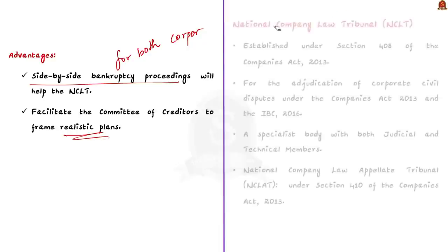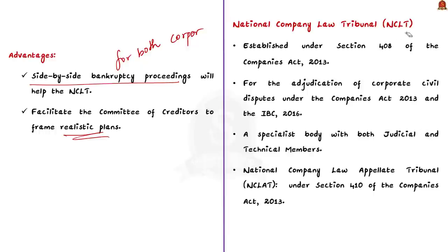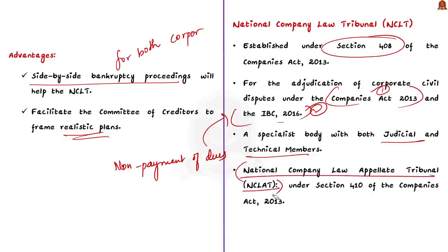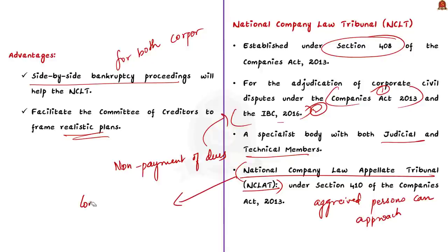From now on, if a corporate debtor faces insolvency proceedings, the same proceedings can be triggered against individual guarantors too. The top court also permitted simultaneous insolvency proceedings against corporate guarantors before the National Company Law Tribunal. Section 60 subsection 2 of IBC clearly states that where a corporate insolvency resolution process of a corporate debtor is pending before an NCLT, an application relating to the insolvency resolution of a personal guarantor of such corporate debtor shall be filed before such NCLT. Side-by-side bankruptcy proceedings before the same forum would also help the NCLT and facilitate the committee of creditors to frame realistic plans, keeping in mind the prospect of realizing creditors' dues from personal guarantors.